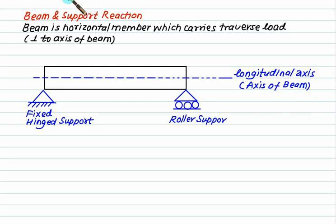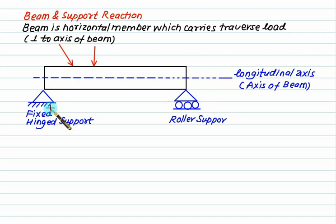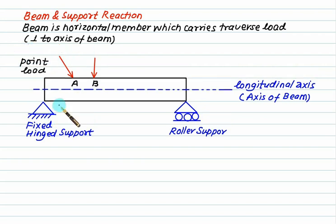We have a point load acting here which is inclined at a particular angle, and another point load acting vertically. One type of load is called a point load. Whenever you are given an inclined point load, you normally resolve those loads. Never resolve a load which is perpendicular to the axis of the beam.